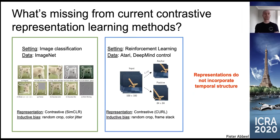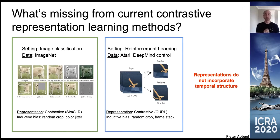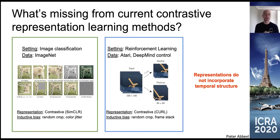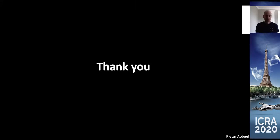What's still missing from current contrastive representation learning methods — both in image classification and RL — is incorporating temporal structure. We're effectively looking at single images or short frame stacks. A lot of what we learn in RL is about how states in the environment connect to each other — which state is reachable from which. A big open question is whether an additional contrastive loss capturing temporal connectivity could enable more efficient exploration and credit assignment, potentially applying to both state-based and image-based RL.